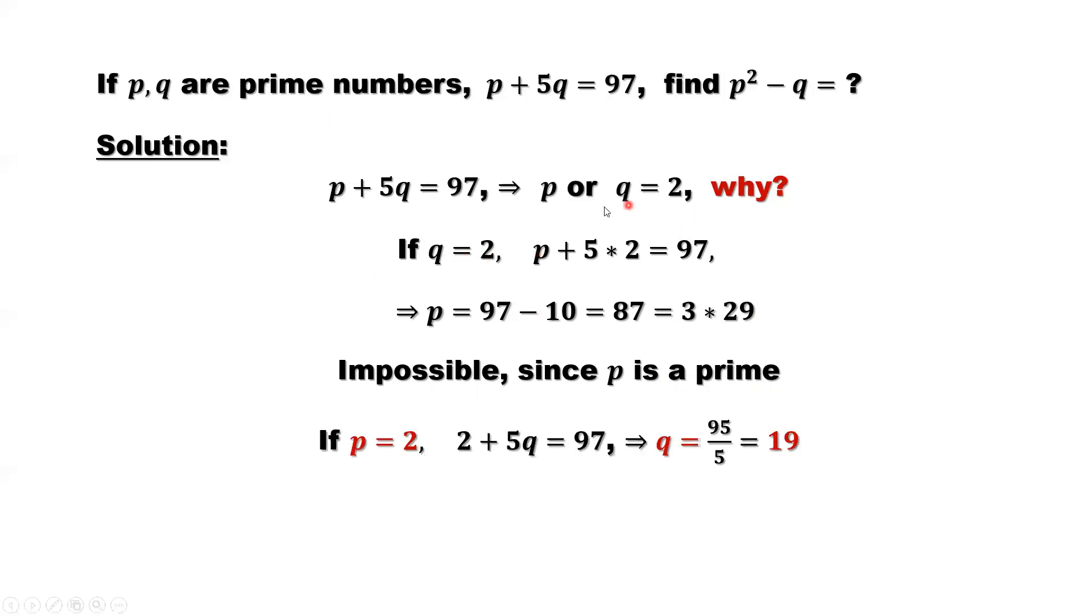Consider the second situation. p equals 2. When p equals 2, replace p by 2 here. You have 2 plus 5q equals 97. Move to the right-hand side. 97 minus 2 is 95. 95 divided by 5, we will get q. q equals 19. 19 is a prime number.